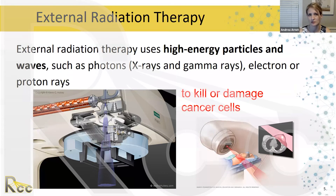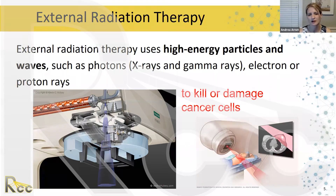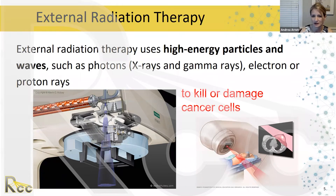The most common form of radiation we use is external beam radiation treatment, which uses high-energy particles and waves such as photons — x-rays and gamma rays — or electron or proton beams to treat patients and damage cancer cells. On the left you can see a linac with the components in the head of the machine, and on the right a breast cancer patient positioned for treatment.